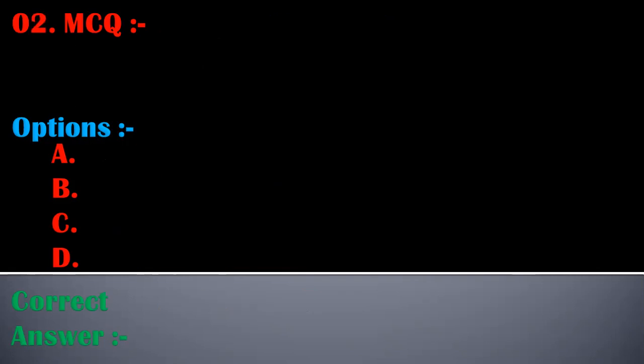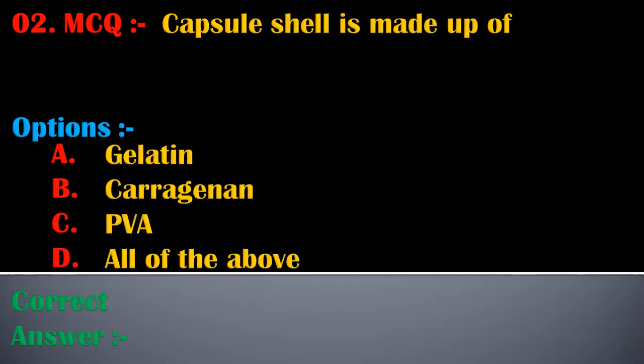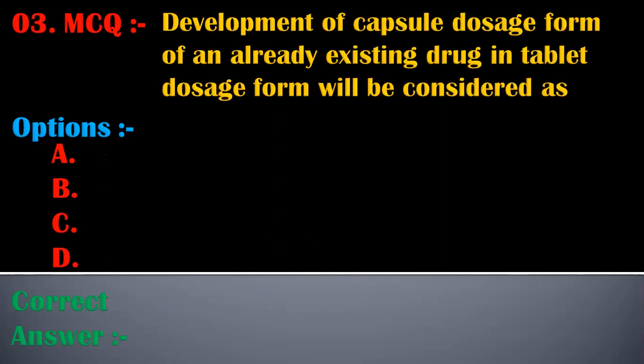The second MCQ is: capsule shell is made up of — options are gelatin, carrageenan, or PBA. The correct answer is all of the above. Capsule shell is made up of gelatin, carrageenan, and PBA.